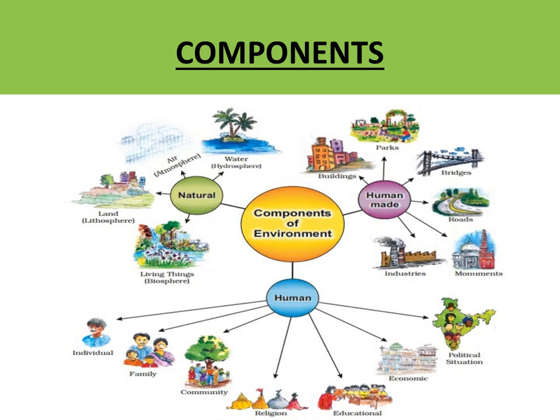The things which we make are called human-made components — for example buildings, parks, bridges, roads for transportation, industries, and monuments. All these are constructed by human beings, so these are human-made components. Basically environment includes all natural, human, and human-made components or elements.